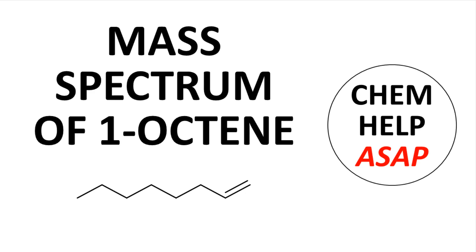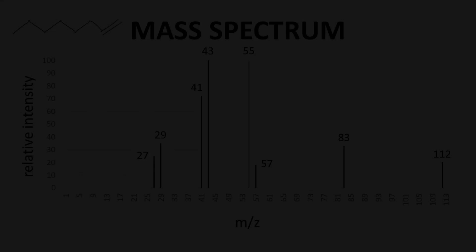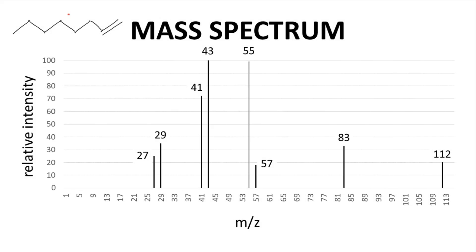Welcome to Chem Help ASAP. Let's take a look at the mass spectrum of a simple alkene, 1-octene. Up in the upper left is 1-octene, and here is the mass spectrum.